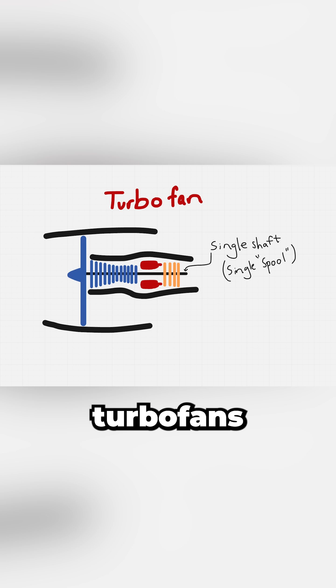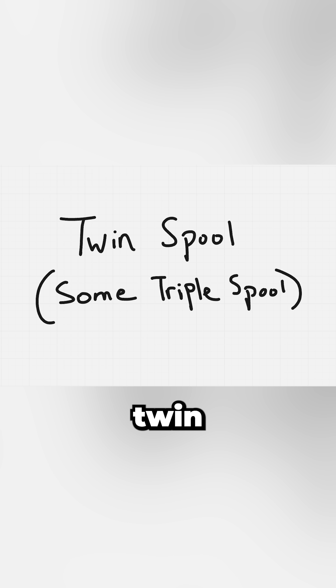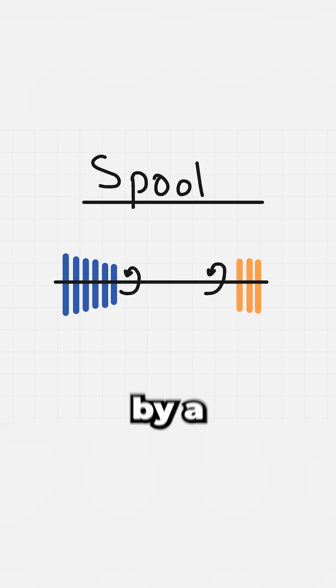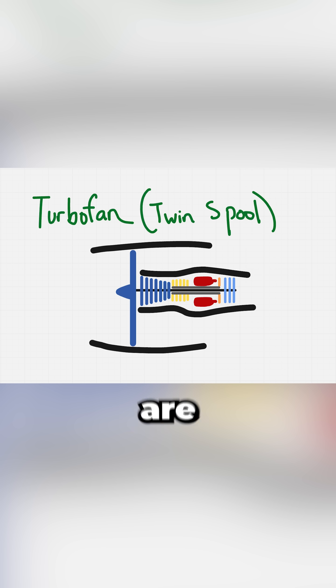But here's the key, modern turbofans are not just a single shaft. They're twin spool engines. A spool is shorthand for a compressor and the turbine that drives it, connected by a shaft. So twin spool means there are actually two independent rotating assemblies inside.